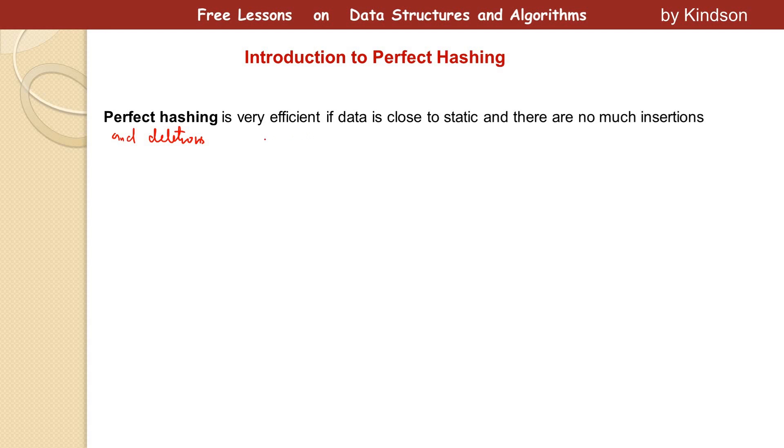In what kind of scenario do we have no insertions or deletions, or where data is static? We can think of a dictionary. In a dictionary, like Webster's dictionary, you don't insert words or delete words. You mainly use the dictionary to search for words and meanings. In this case the data is close to static and perfect hashing works really well. Data might be inserted after many years when new English words come in, but that doesn't happen often, so we can assume the data is close to static.